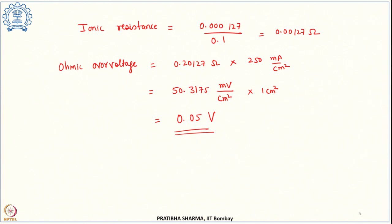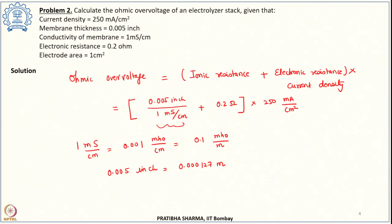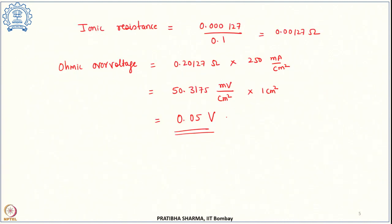In summary, the ohmic overvoltage is the sum of ionic and electronic resistance times current density. We found the ionic resistance through unit conversion, added it to the electronic resistance to get total resistance, and multiplied by current density to get the ohmic overvoltage.